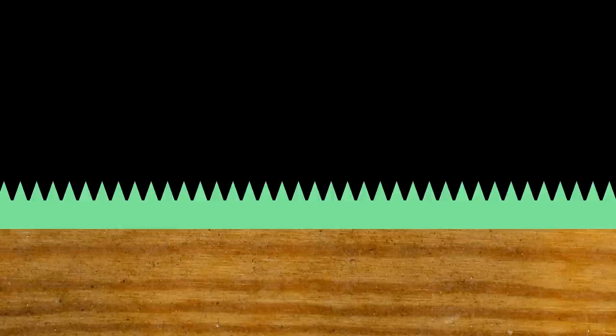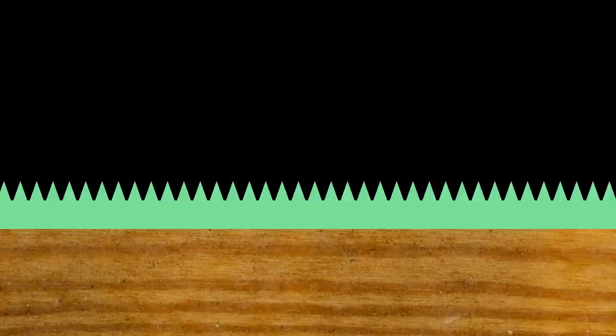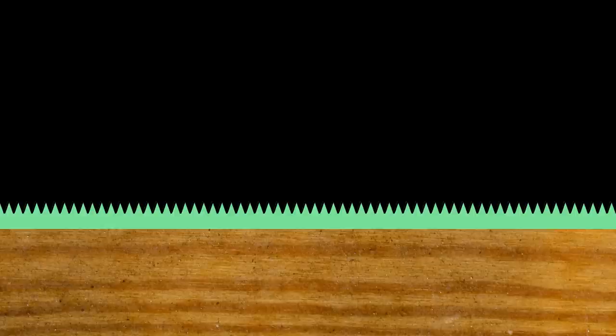After sanding it flat with 1000 grit sandpaper it'll already feel very smooth. In reality however the surface is covered in tiny scratch marks. That's also why it will look kind of milky and not very shiny. So to remove these scratch marks I'll sand it with even finer sandpaper. It'll look and feel even smoother but it's still not good enough. So I'll sand it again with even finer sandpaper.